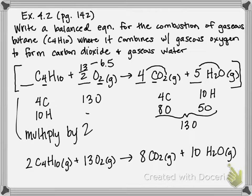Now, if we count up, we have 8 carbons, 20 hydrogens, and 26 oxygen on this side. And on our product side, we have 8 carbon, 8 times 2, 16 oxygen, plus 8 times 2, 16 oxygen plus 10 oxygen from our water gives us 26 oxygen.